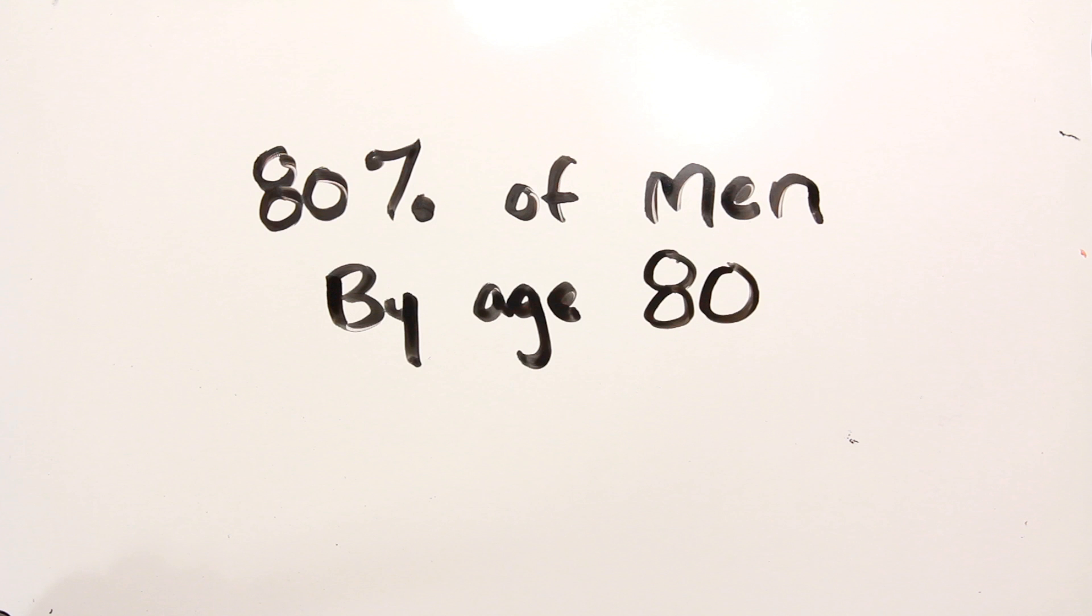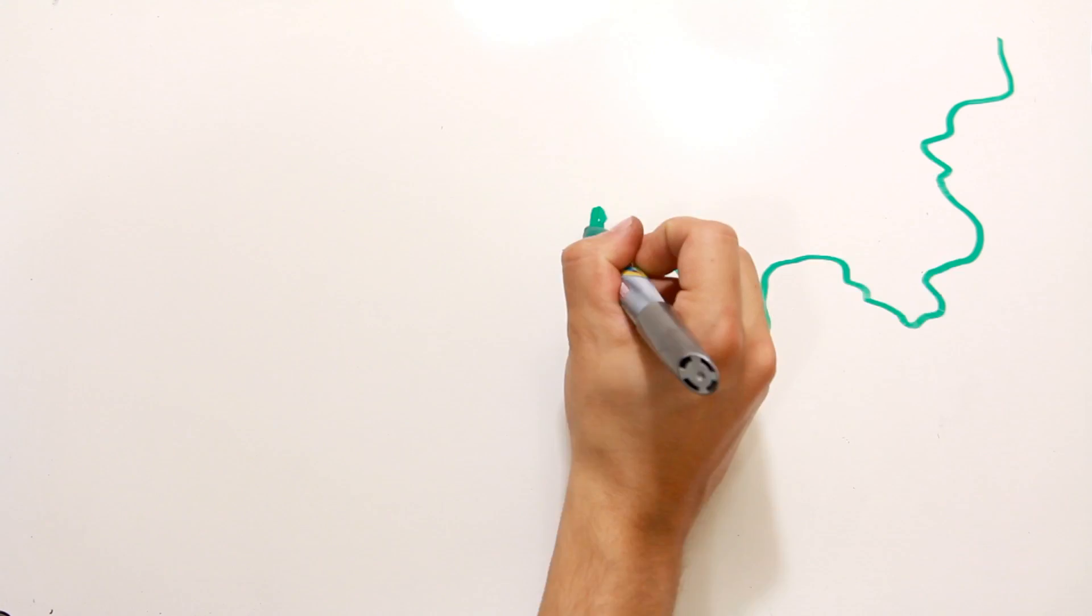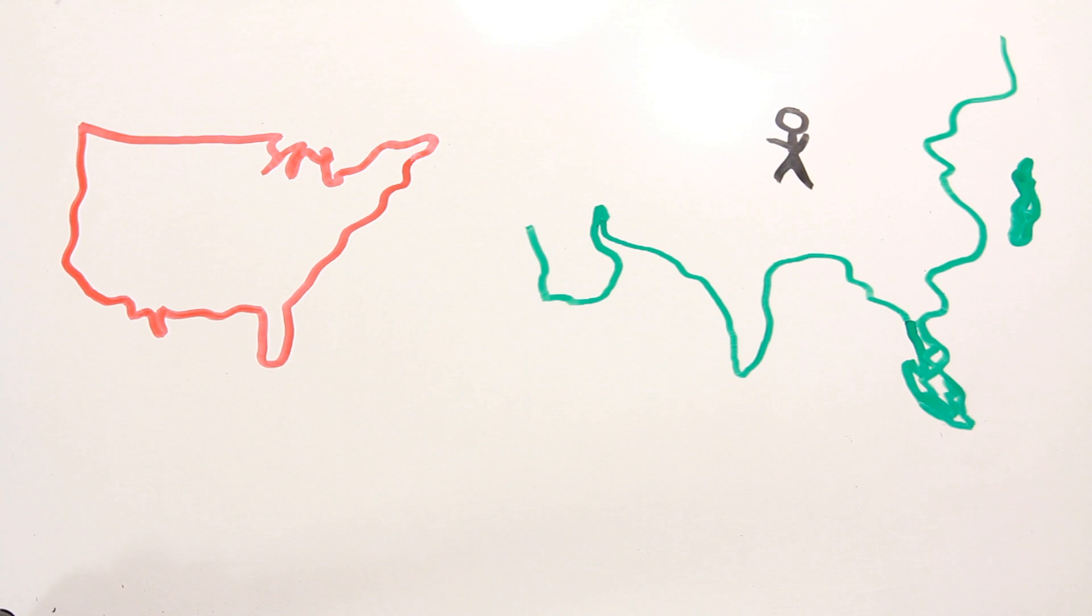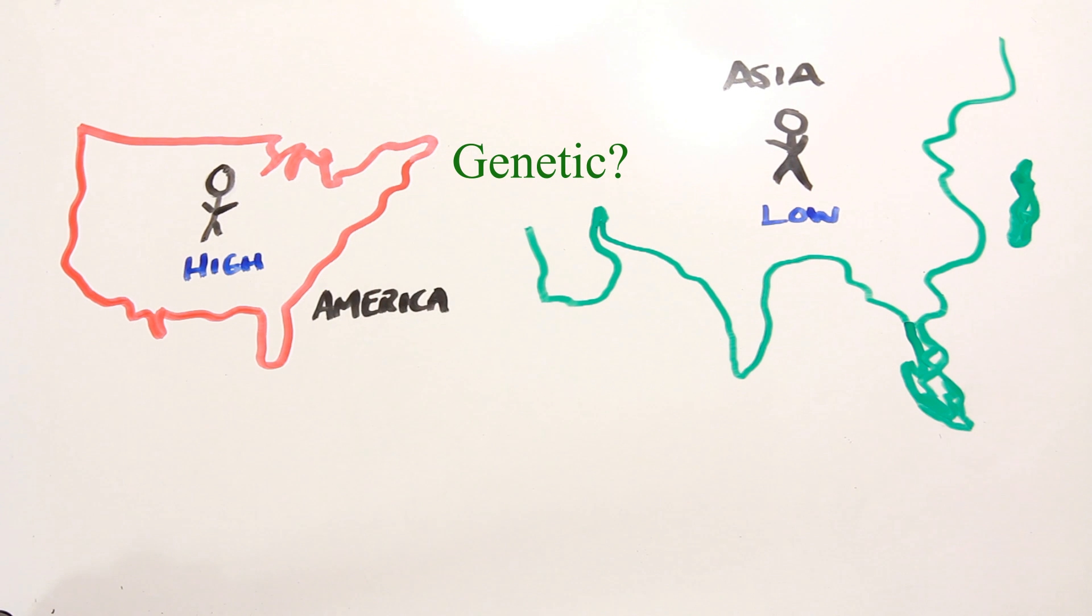So is there anything we can do about it? In some ways, yes. If we look at Asia, we see some of the lowest prostate cancer numbers across the globe. So we might think it's genetic, and many studies support this. But, interestingly, Asian men who have moved to America show a higher incidence of prostate cancer than those in Asia, in proportion to how long they've been in America.